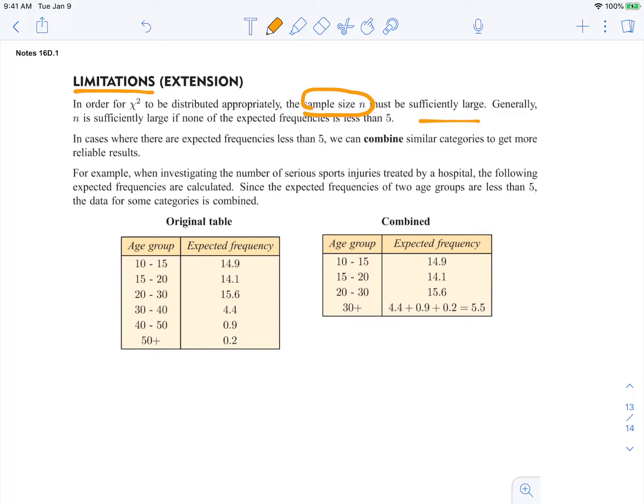Generally, n is sufficiently large if none of the expected frequencies are less than 1. In cases where there are expected frequencies less than 1, we need to combine similar categories to get more reliable data.